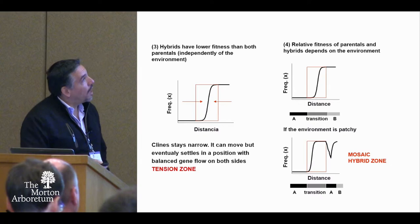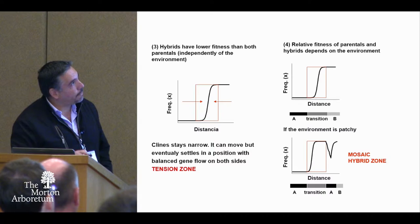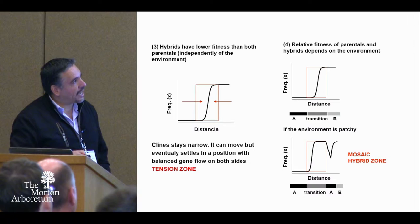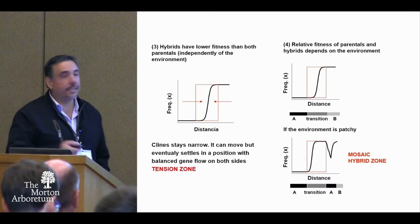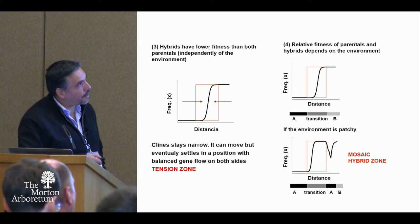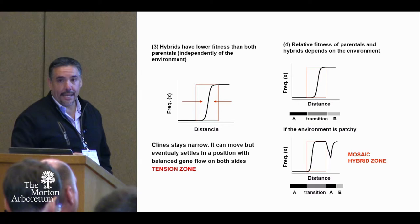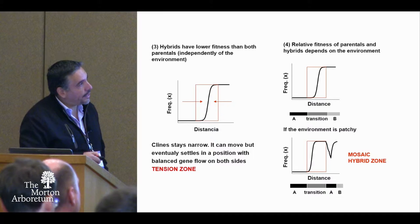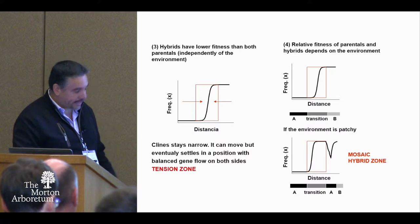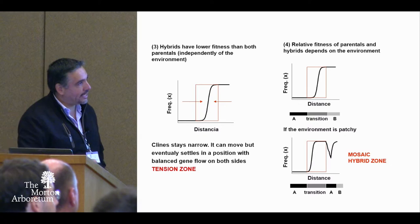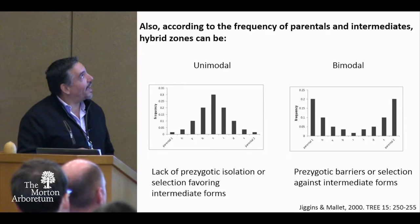Hybrids are selected against within the tension zone. Or it can be that the fitness of the parentals and the hybrids depends on the environment, so the hybrid zone is associated to transitional or intermediate environments. You have environment A where species A lives, then a transitional environment where the hybrid zone is, and then environment B where species B lives. It could also be that the environment is not a gradient but patchy, with different patches intermixed, and in this case you don't see a simple cline but a broken pattern — called a mosaic hybrid zone.